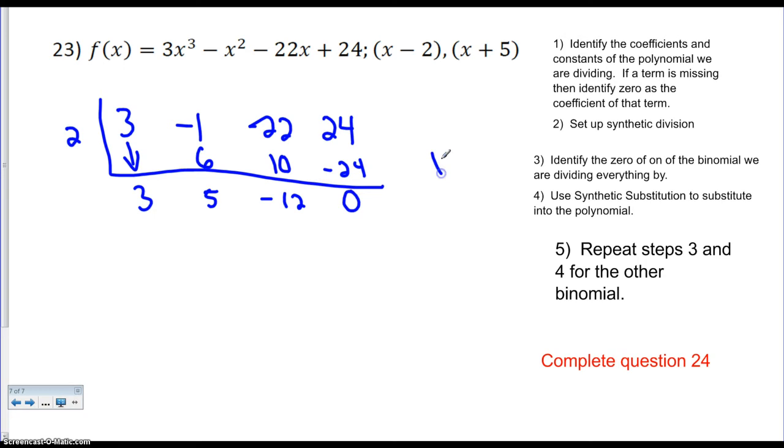So I'm going to set x plus 5 equal to 0. And I'm going to plug it in. So I got 3, negative 15, negative 10, and positive 50, and I have a remainder of 38.